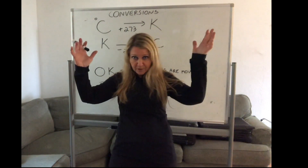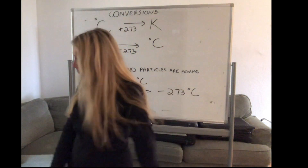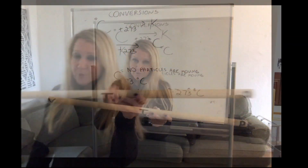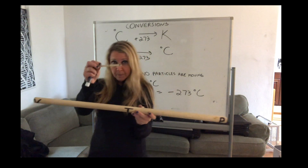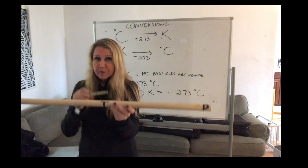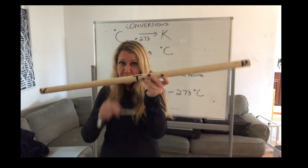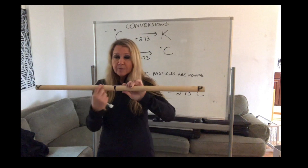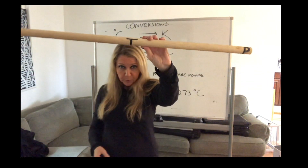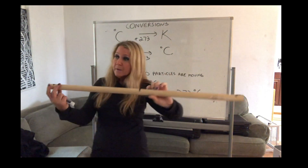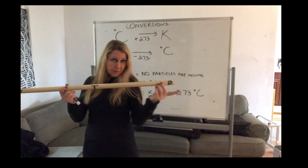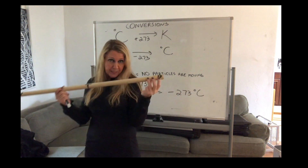Those three things we're going to look at when we look at these three gas laws. You can use a popsicle stick and write the letters on it. In the middle of the popsicle stick, write the letter T for temperature. On one end of the stick, write the letter V for volume. On the other end, write the letter P for pressure.